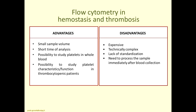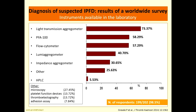The last technique I would like to discuss is flow cytometry, which has many interesting advantages: it uses very small sample volumes, has very short analysis times, allows studying platelets in whole blood in their natural environment, and can study platelet function even in thrombocytopenic patients, with the possibility to assess many different functions with a single technique. The disadvantage is that it is expensive, technically complex, lacks standardization, and requires blood processing soon after collection. Despite this, 57% of around 200 platelet laboratories worldwide use flow cytometry, as shown in a recent survey.